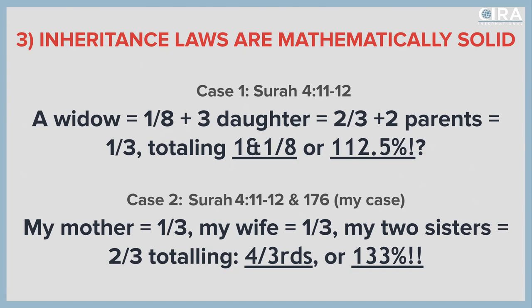When a man dies, according to the first case study, the widow gets one eighth. So he leaves a wife behind, she gets one eighth. If he has three daughters — which is the case of my brother-in-law who did die — then the three daughters get two thirds. And when he died, his parents were still living. So the widow, my sister, got a third. The three daughters would get two thirds. And then the two parents still living would get another third. You total that up?